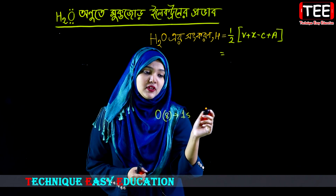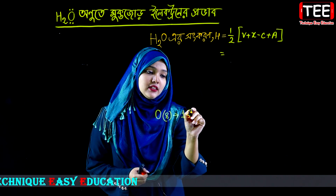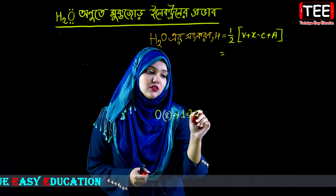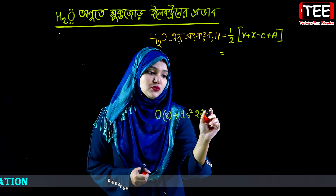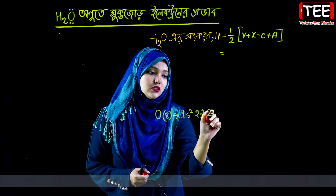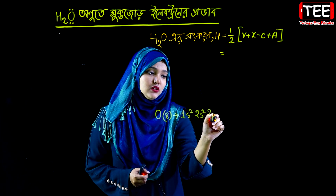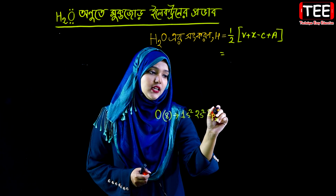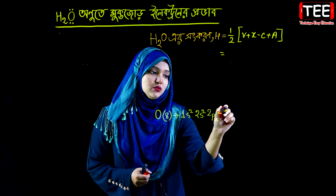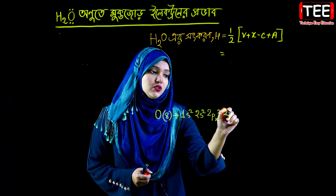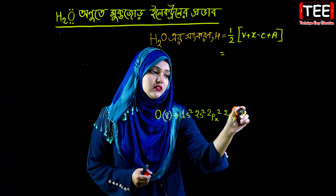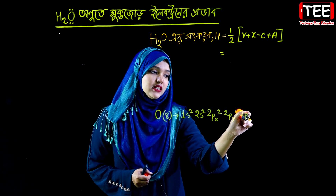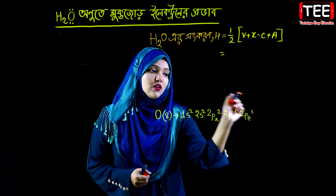The electron configuration of oxygen is: 1s², 2s², 2px², 2py¹, 2pz¹.